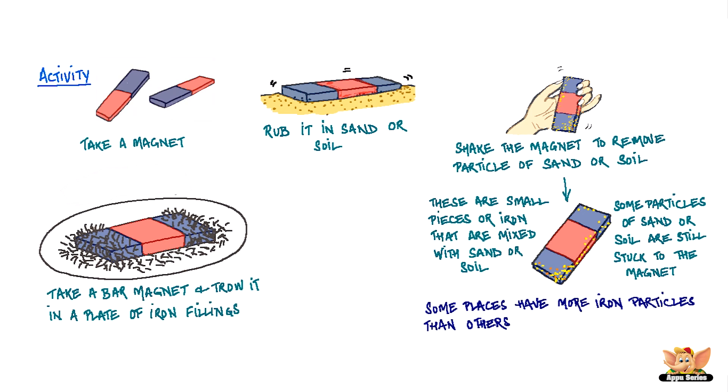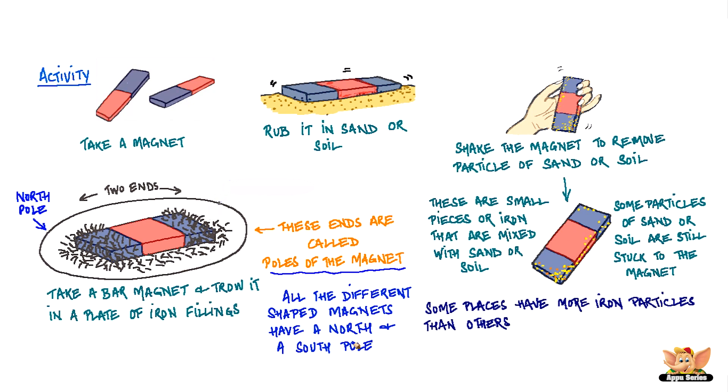If you take a magnet bar and throw it in a plate of iron filings, you will find that most of the iron filings are attracted towards the two ends of the bar magnet. These ends are called the poles of the magnet. All the different shaped magnets have a north pole and a south pole.